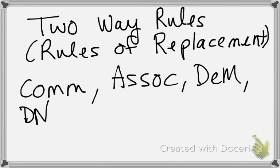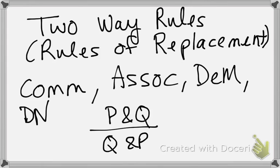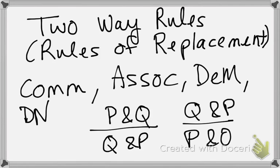And so these rules go two ways. So if we know the formula P and Q, then we can know the formula Q and P, but it works both ways. If we know Q and P is true, then we also know P and Q is true. So that's one feature of them, is that they go both ways.